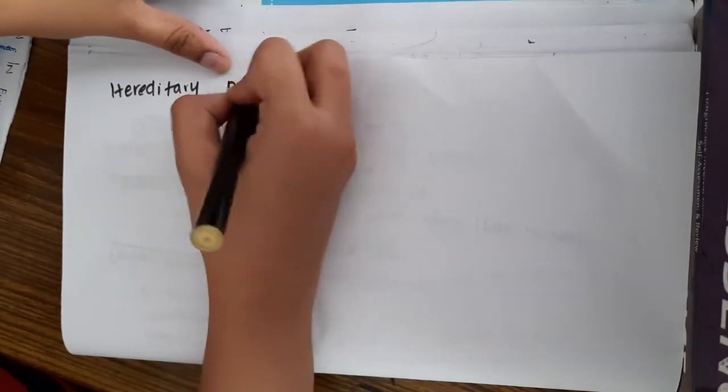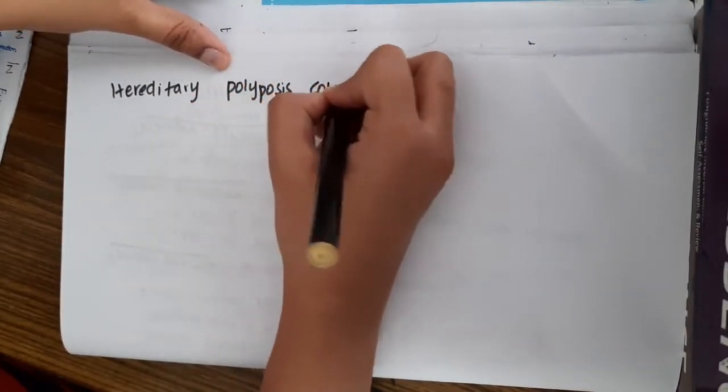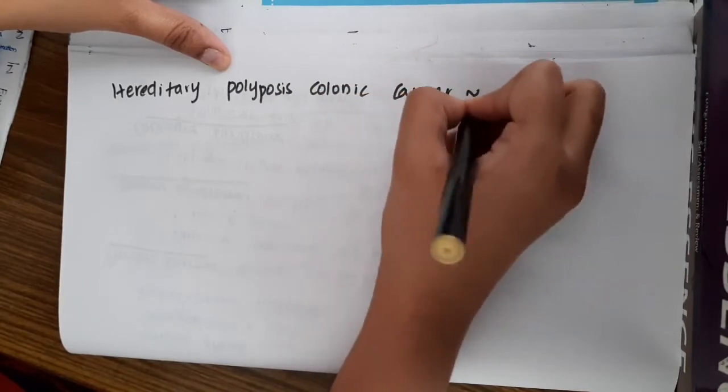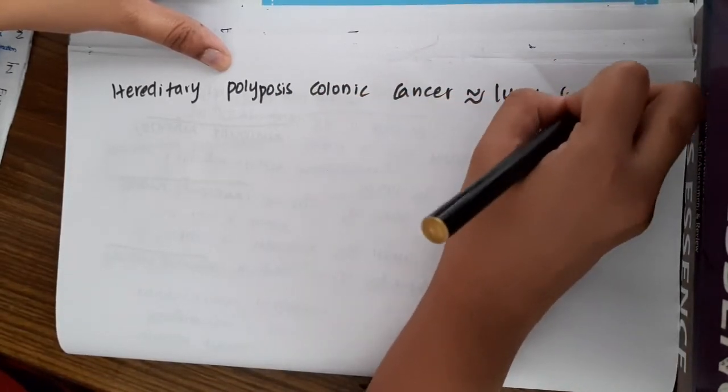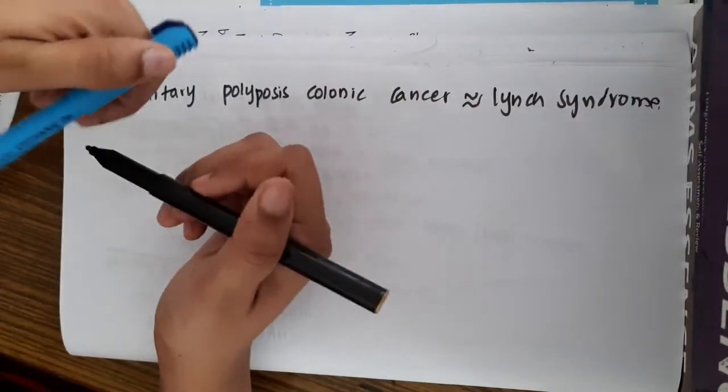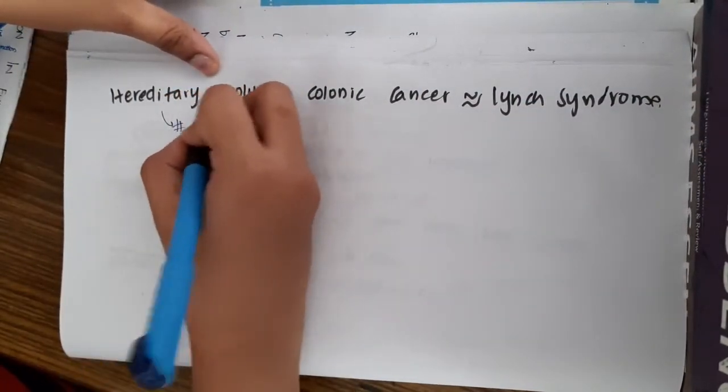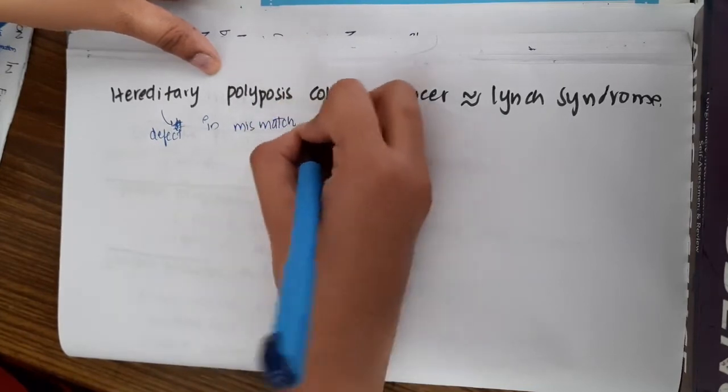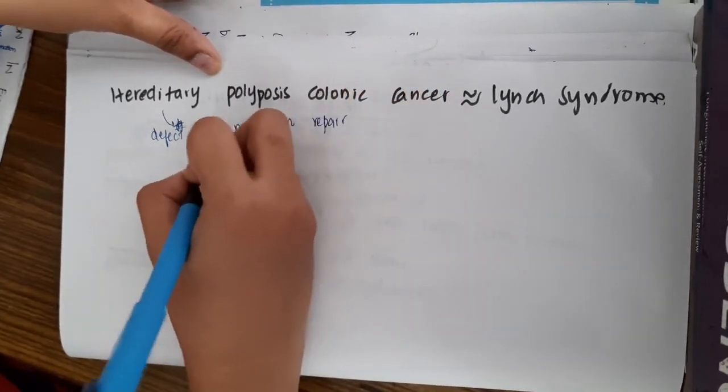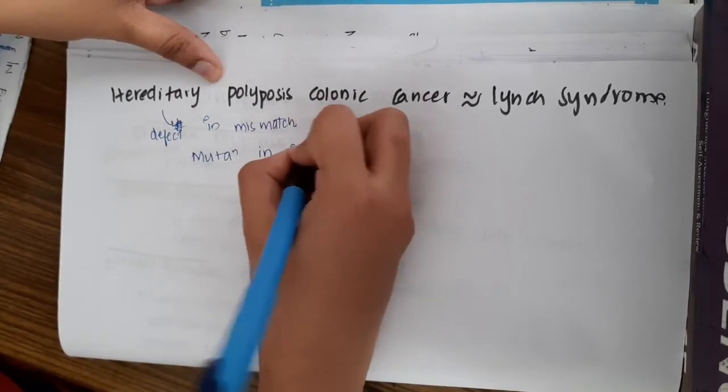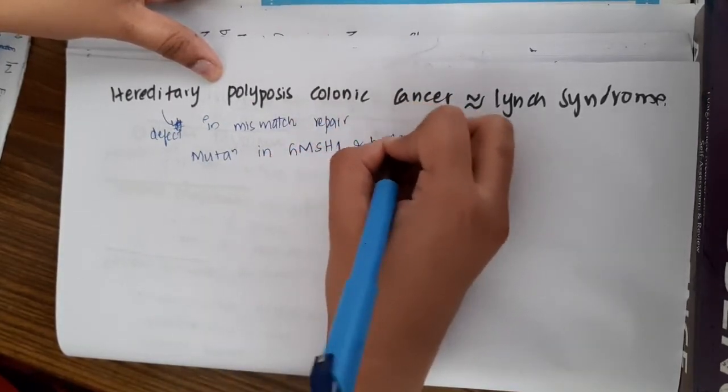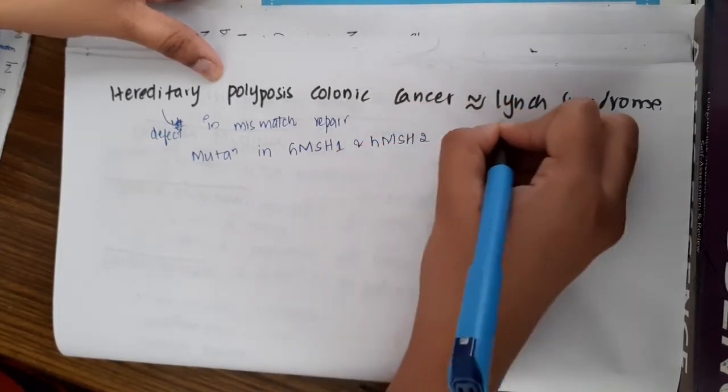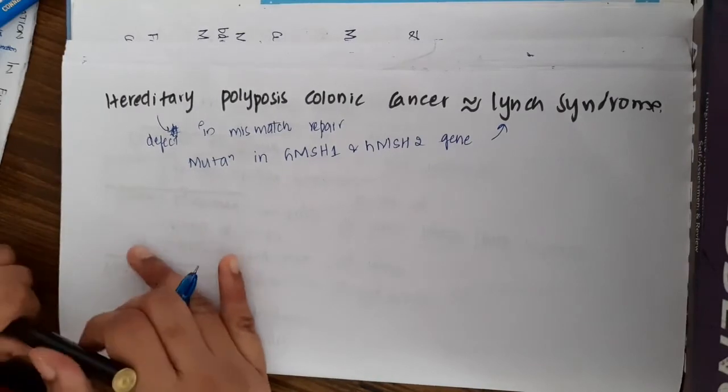Then the next disorder is hereditary polyposis colonic cancer. This hereditary polyposis colonic cancer is also called Lynch syndrome. Here there is a defect in mismatch repair. You can see a mutation in the mismatch repair genes, that is HMSH1 and HMSH2 genes, thus resulting in this hereditary polyposis colonic cancer.